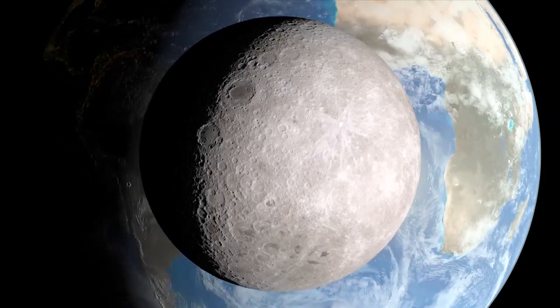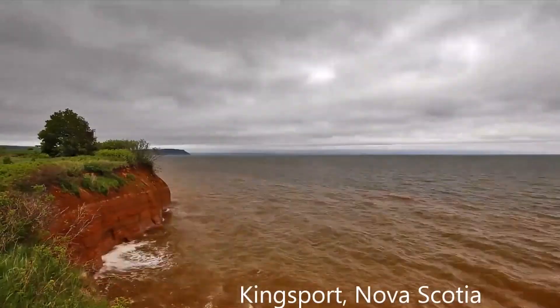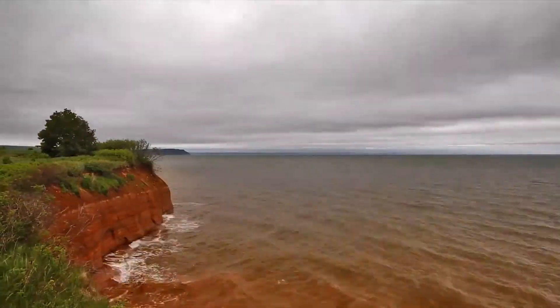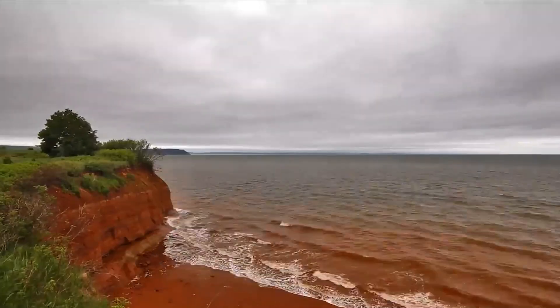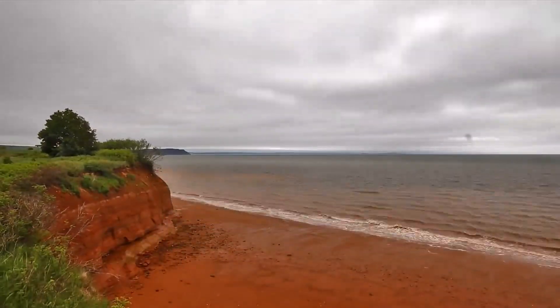On much shorter timescales, even small changes in tidal patterns could affect global climate. Ocean tides help drive circulation of water between the equator and poles, playing a role in distributing heat around the planet. Weaker tides could potentially alter these currents, with complex ripple effects on regional climates.